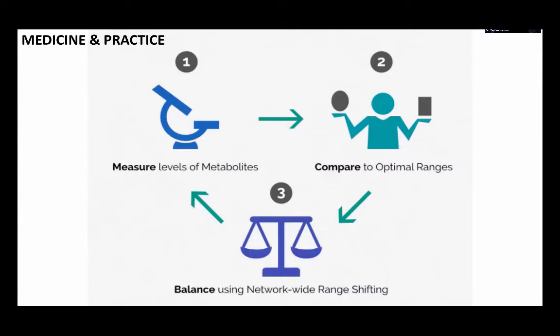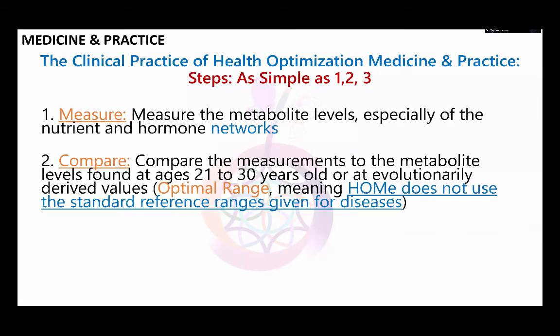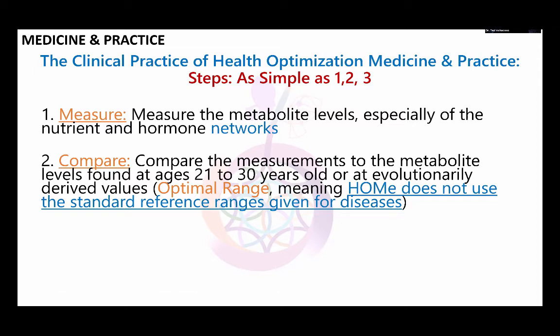Medicine in practice — the third element — is very simple: you measure, you compare, and balance. First, you measure the metabolite levels, especially of the nutrient and hormone networks. Then you compare the measurements to the metabolite levels found at age 21 to 30, or at evolutionarily derived values — the optimal range. We don't use standard reference ranges given for diseases. Then balance: we correct and shift the nutrient and hormone networks using the active form of nutrients and bioidentical hormones towards the optimal range, by using ratio correction and network-wide range shifting.